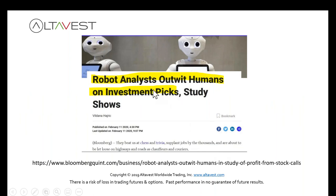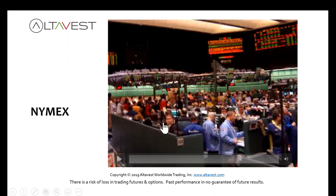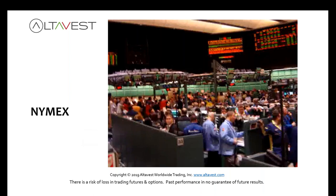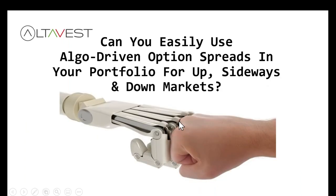Bloomberg says robots are outwitting humans on their investment picks. Here's where we used to be — the trading pits, the trading floor — and here's what it is now. These machines have no emotion. They run automatically with built-in risk and profit controls. So how can you use these algo-driven machines and systems to your advantage in trading options?